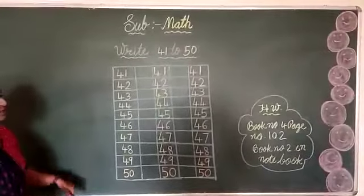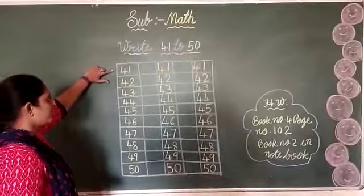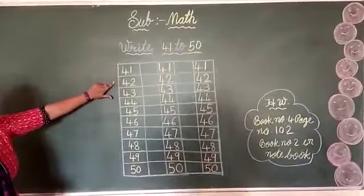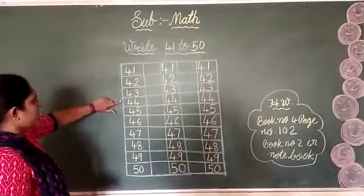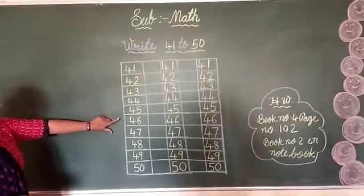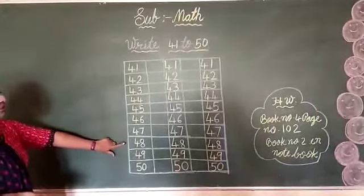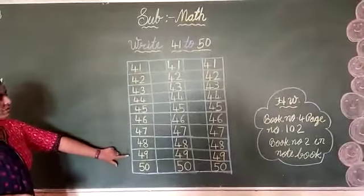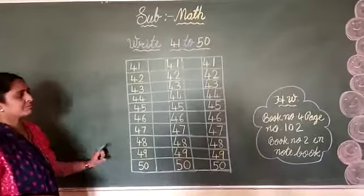41 to 50. We taught you this, now we will revise together. 41, 41, 42, 42, 43, 43, 44, 44, 45, 45, 46, 46, 47, 47, 48, 48, 49, 49, 5, 0, 50. Okay.